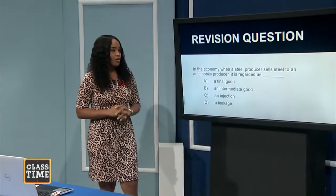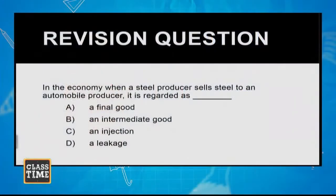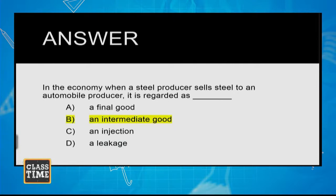Next question: in an economy, when a steel producer sells steel to an automobile producer, is it regarded as a final good, an intermediate good, an injection, or a leakage? The correct answer is intermediate good. The steel being produced is not the final good — its intention is to be used to produce another good, the finished automobile. For that reason, the steel is considered an intermediate good.